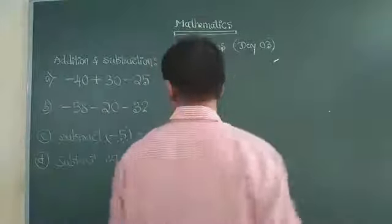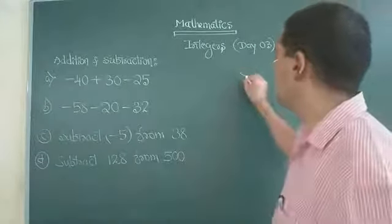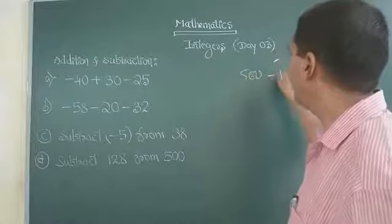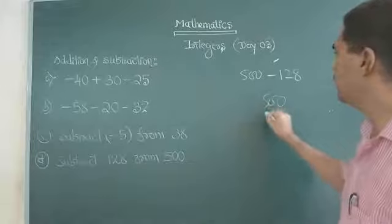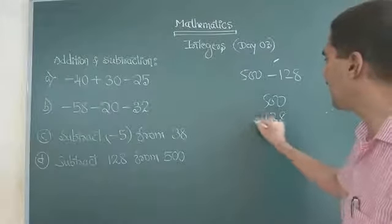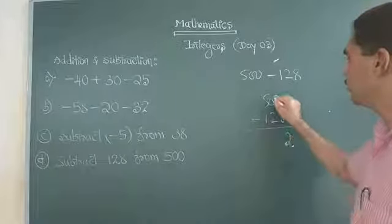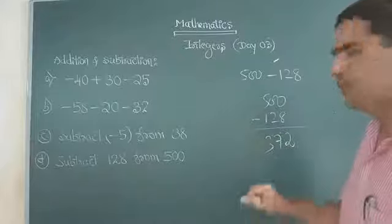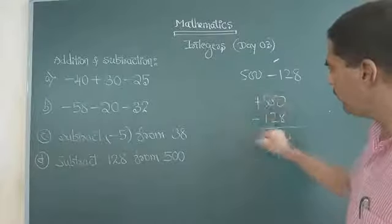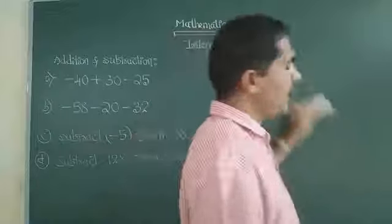Subtract 128 from 500. So 500 in the, 120 in the cadre. So I will do like this. 128, subtract. I will do the subtraction. 10 minus 8 is 2, 9 minus 2 is 7, 4 minus 1 means 3. 372 I got. 500 has plus sign, so plus. So 372 I got. So addition and subtraction we are doing. Keep these things in your mind.